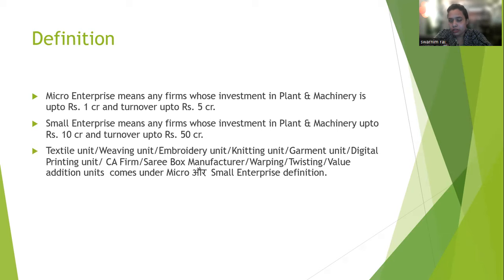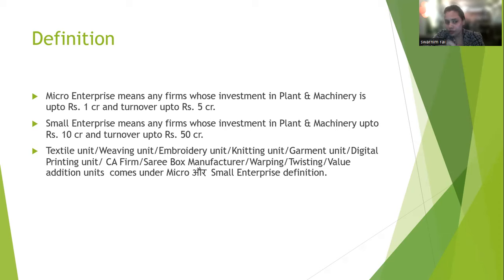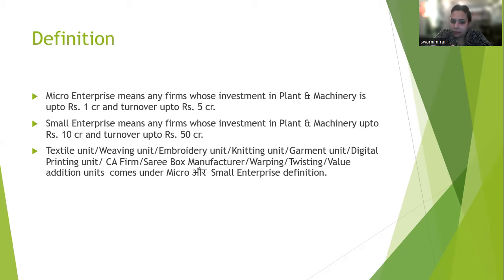Which companies can be micro and small enterprises? You can ask your creditors if they are registered under MSME. Micro enterprises have investment up to 1 crore and turnover up to 5 crore. Small enterprises have investment up to 10 crore in plant and machinery and turnover up to 50 crore — as you can see in the slide. Examples of MSME units include textile units, weaving units, embroidery units, knitting units, garment units, digital printing units, CA firms, box manufacturers, wrapping, twisting, and value addition units.